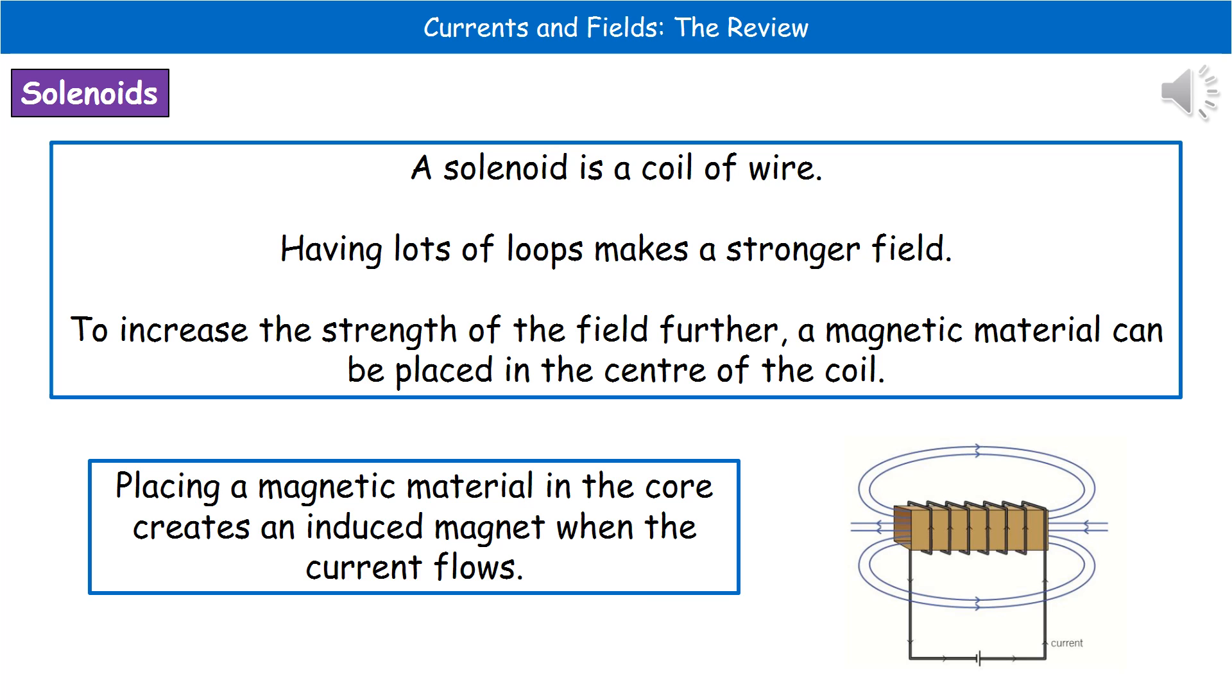If we still wanted to increase the strength of that field further, we could place a magnetic material in the centre of that coil. What we find is by doing that, as the current flows, it creates an induced magnet in that magnetic material, and that increases the strength of our magnetic field further.